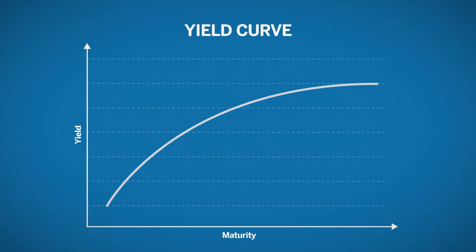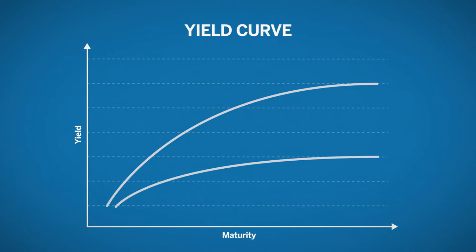The influencing factor for a treasury spread trade is the yield curve. The yield curve is the line which indicates the rate at which long-term investors want to be compensated in the form of higher yields for holding their investments for a longer period of time. There are times where long-term bondholders will demand significantly higher yields compared to short-term bondholders.